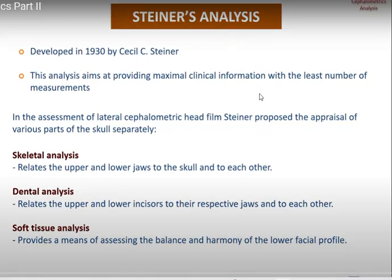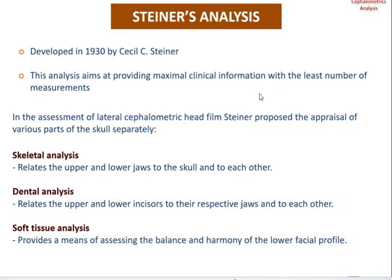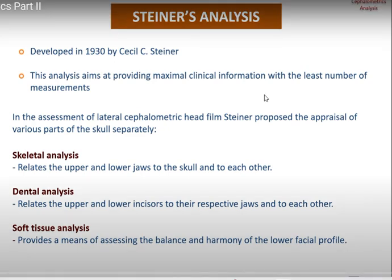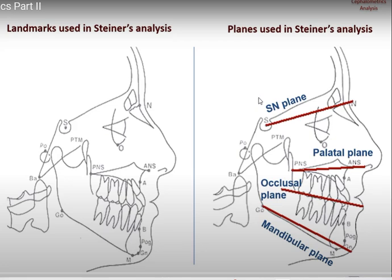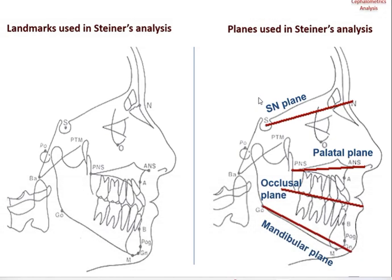Steiner's analysis aims to relate the upper and lower jaws to the skull and cranium and to each other. Dental analysis entails the relationship between the upper and lower incisors to their respective jaws and to each other, whereas the soft tissue analysis provides a means of assessing the balance and harmony of the lower facial profile.